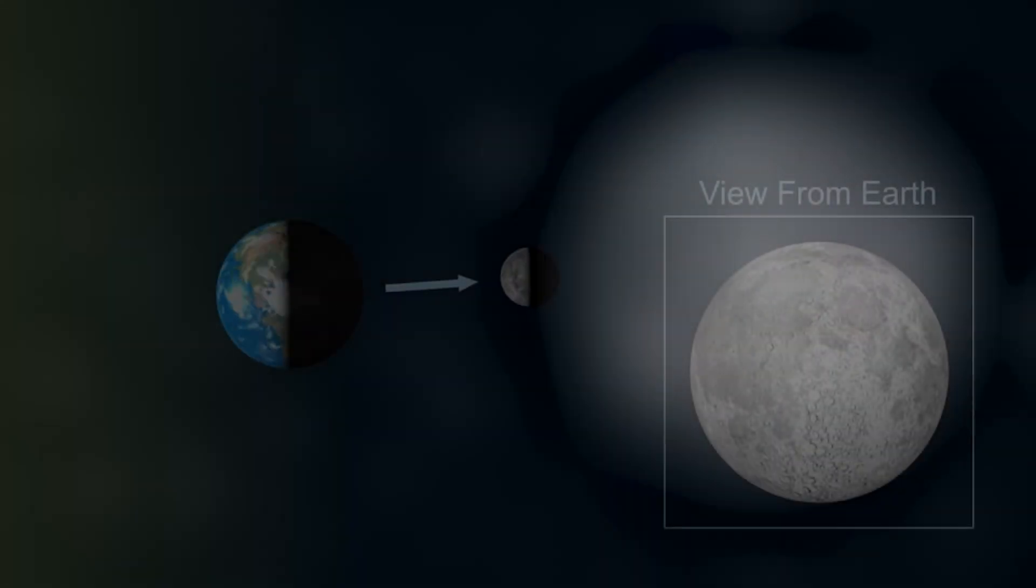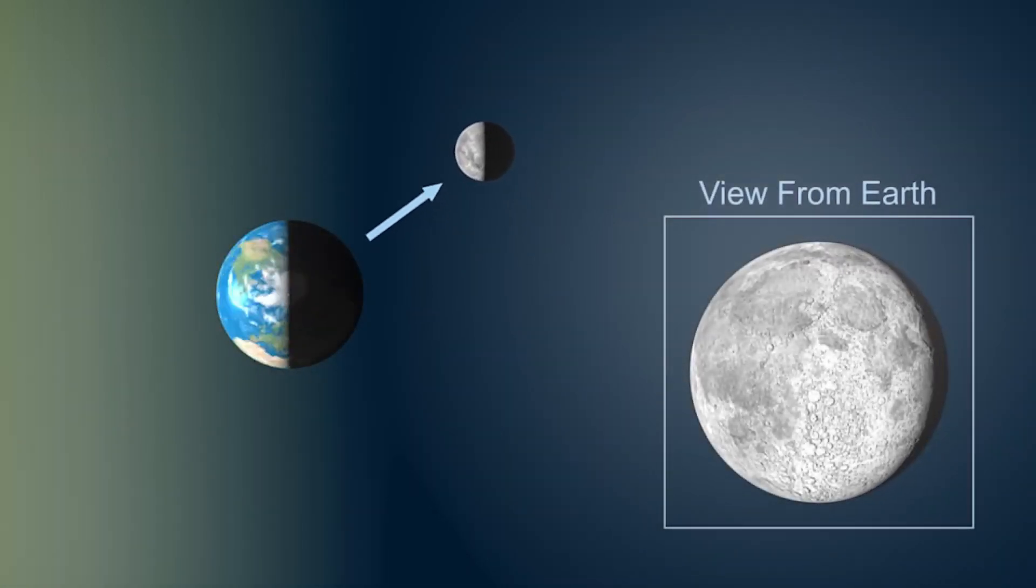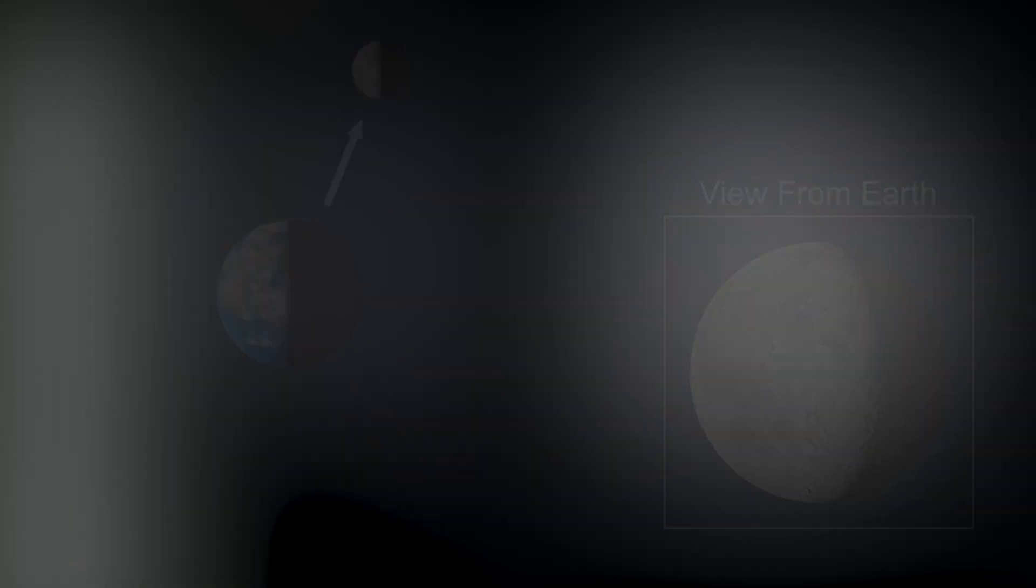We'll start with the Moon. It takes the same amount of time to orbit the Earth as it does for it to spin on its axis. As a result, we always see the same side of the Moon facing the Earth.